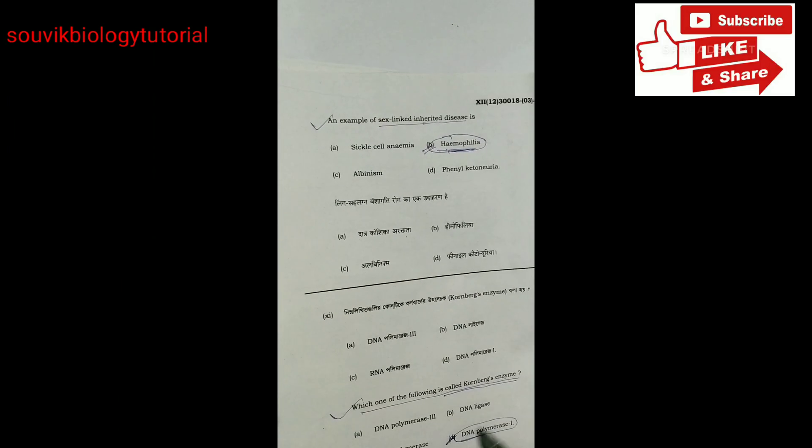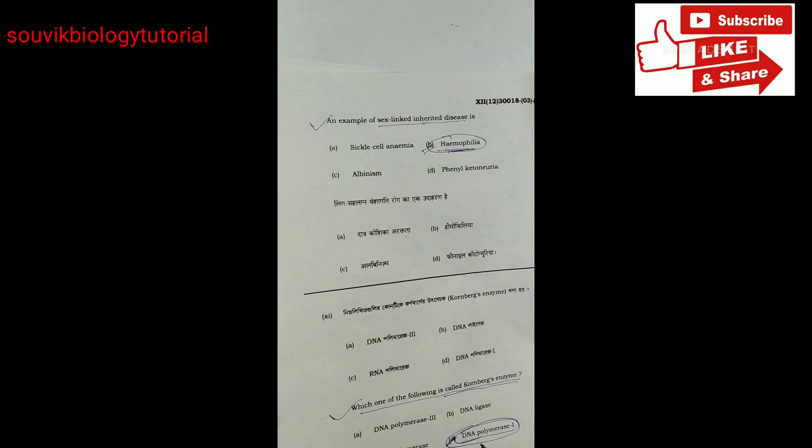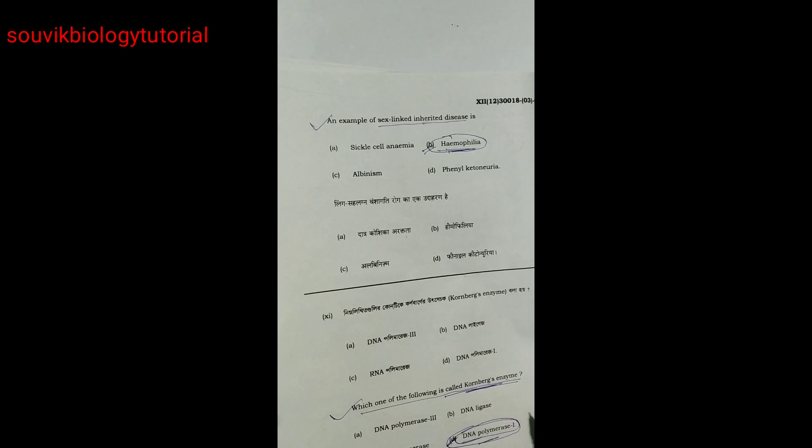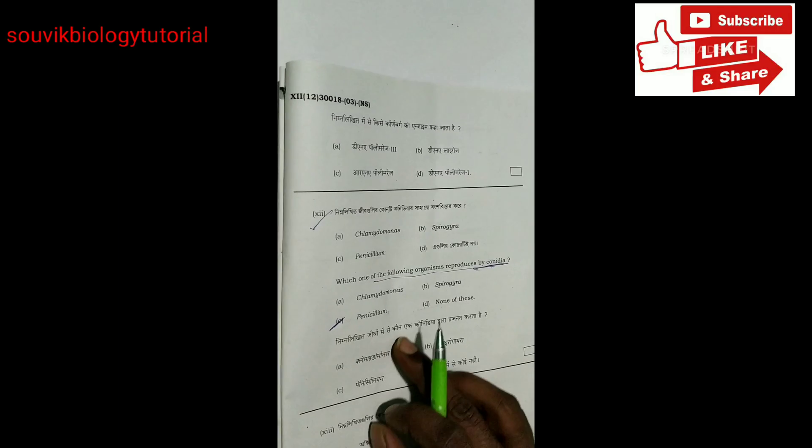Next. Which one of the following is called Kornberg enzyme? DNA Pol 1. Why DNA Pol 1? Because DNA Pol 1 was discovered by Kornberg. So DNA Pol 1 is also known as the Kornberg enzyme.